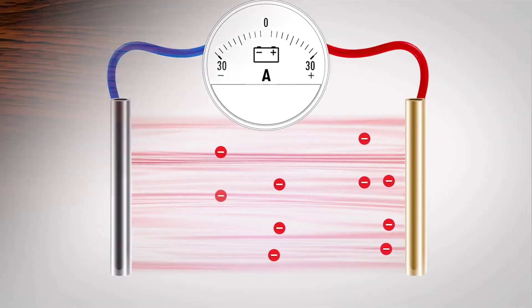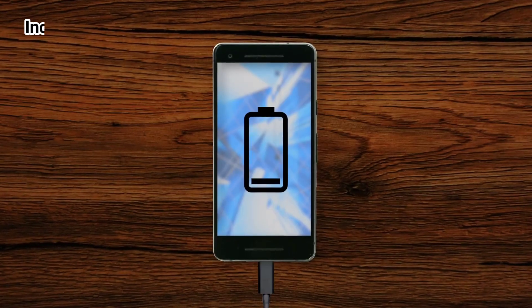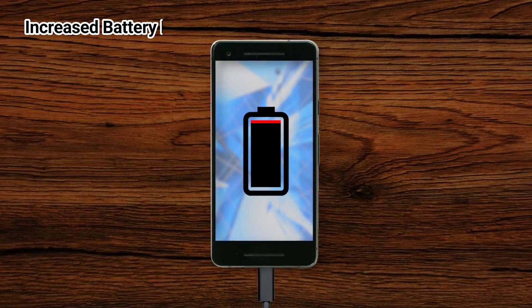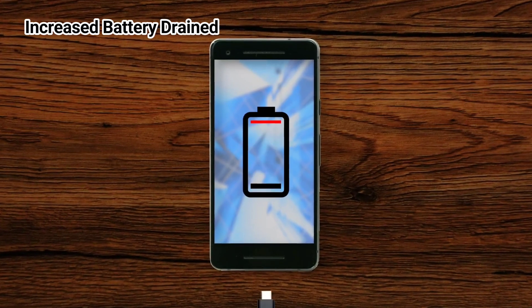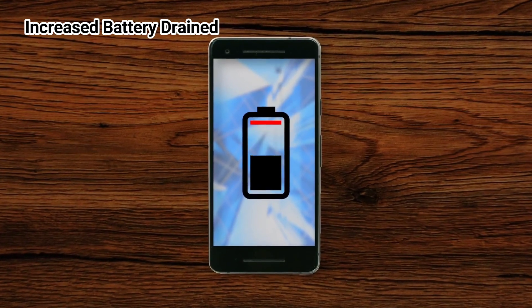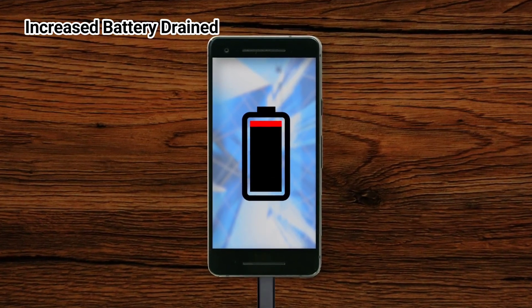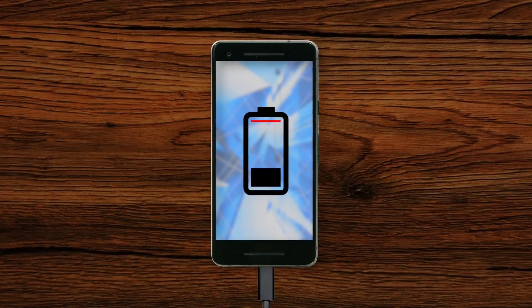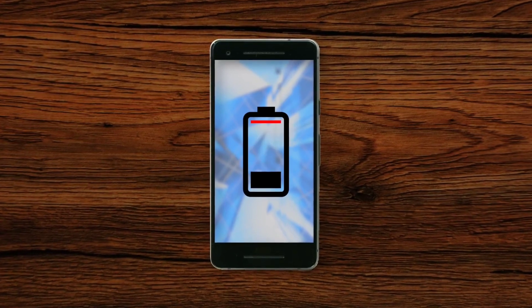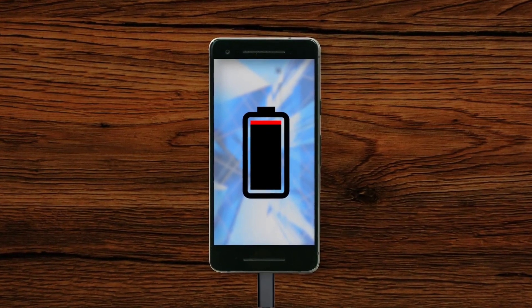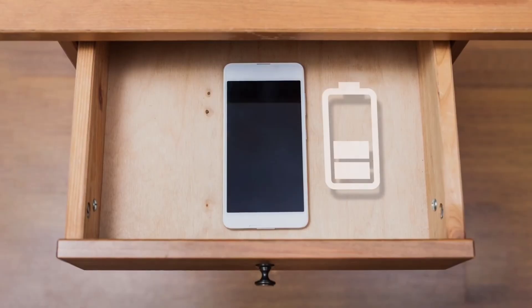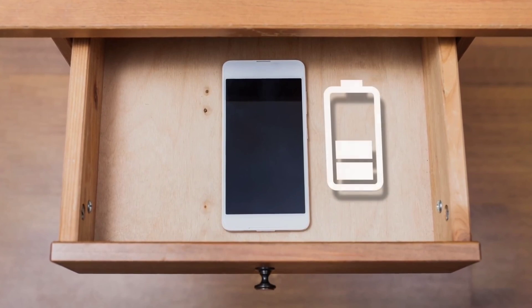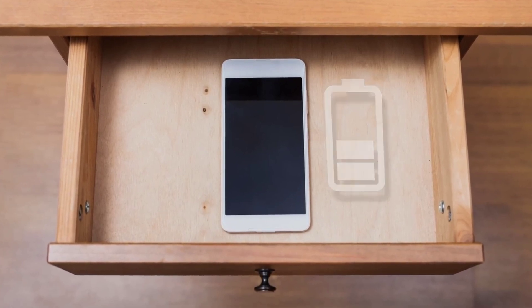Number 3 is Increased Battery Drain. If a virus like malware is running in the background during normal cell use, you may experience an inexplicably quick drain on your battery with increased use of your phone's RAM.